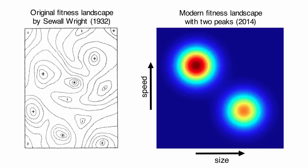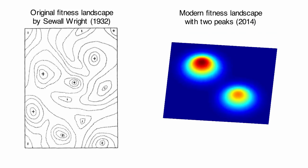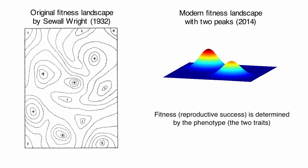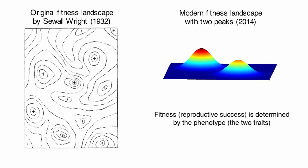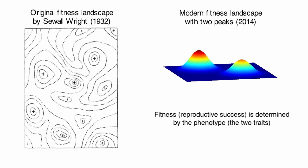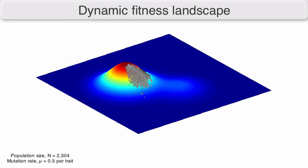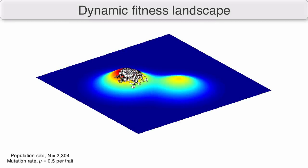Fitness landscapes were invented by Sewell Wright in 1932. They map fitness of an organism as a function of the genotype or the phenotype, like size and speed. Higher fitness means a higher chance of reproducing, and populations therefore evolve towards higher ground. The benefit of visualizing evolution on fitness landscapes is that it gives an intuitive understanding of how populations evolve.